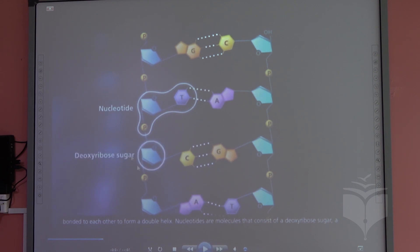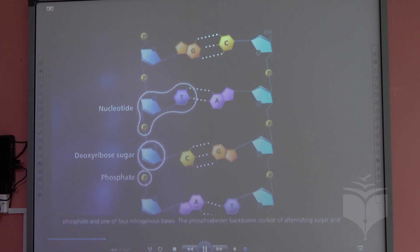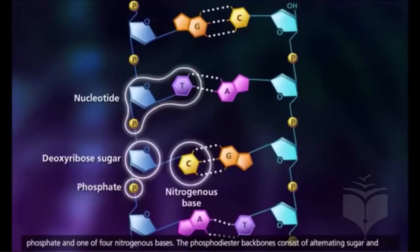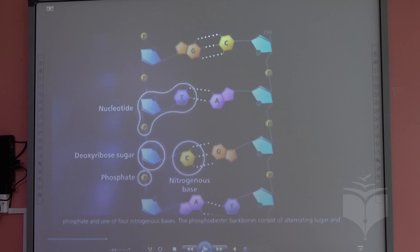Let's see what the nucleotide is made up of. The first component is called deoxyribose sugar — that's why we call it DNA, where 'D' stands for deoxyribose. The second part is the phosphate group. The third part is called the nitrogenous base. So these three parts — deoxyribose sugar, phosphate group, and nitrogenous base — form the nucleotide.